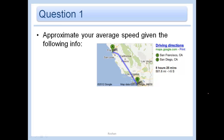Say that you're going from San Francisco to San Diego, and you go to Google Maps and see that it takes 8 hours and 25 minutes, and your distance is 501.6 miles. So how are you going to find your average speed? What is the formula relating distance, rate, and time? Distance equals rate times time.